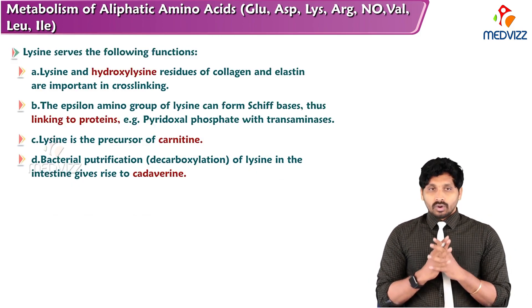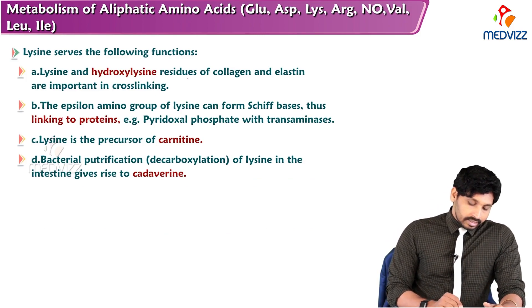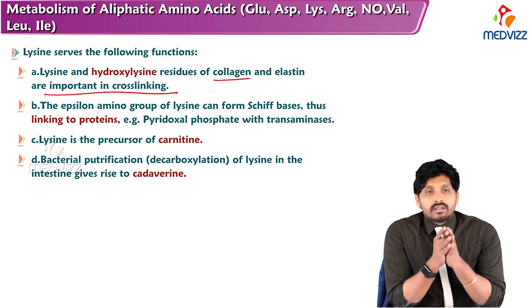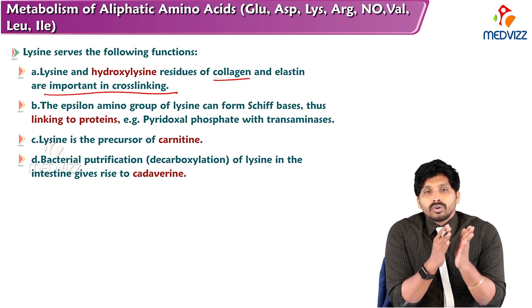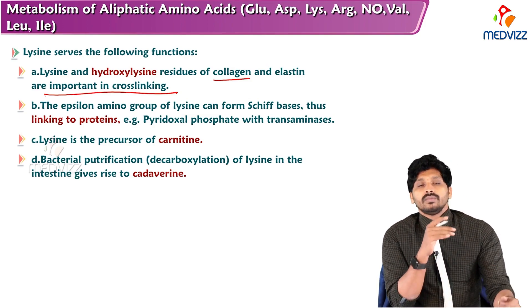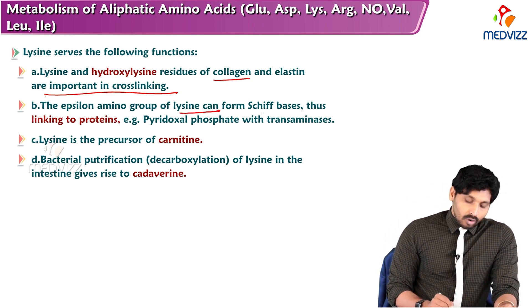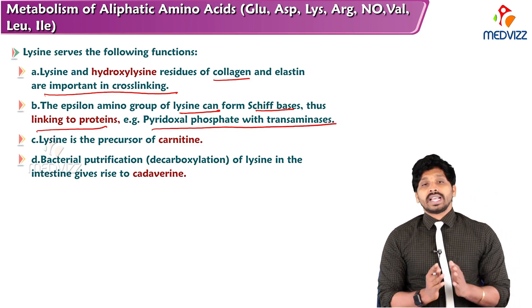Lysine serves the following functions. Lysine and hydroxylysine residues of collagen and elastin are important in cross linkage. Along with proline, when lysine gets hydroxylated to form hydroxylysine, they are the main important residues of collagen and elastin for cross linkage. The epsilon amino group of lysine can form Schiff bases, thus linking to proteins — for example, pyridoxal phosphate in transamination reactions.